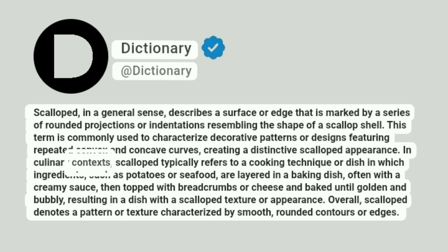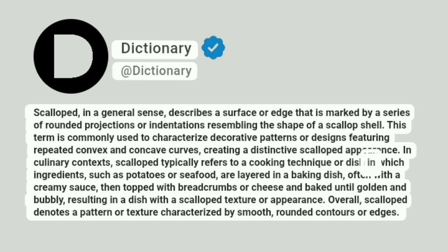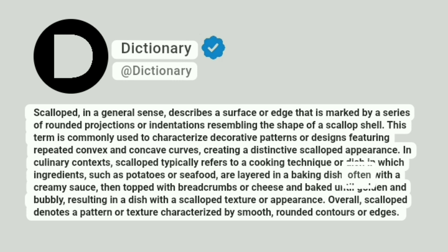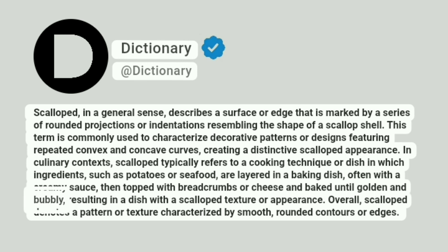In culinary contexts, scalloped typically refers to a cooking technique or dish in which ingredients, such as potatoes or seafood, are layered in a baking dish, often with a creamy sauce, then topped with breadcrumbs or cheese and baked until golden and bubbly, resulting in a dish with a scalloped texture or appearance.